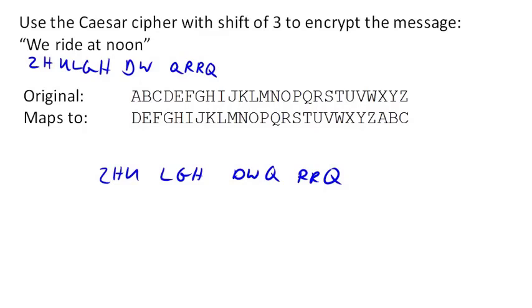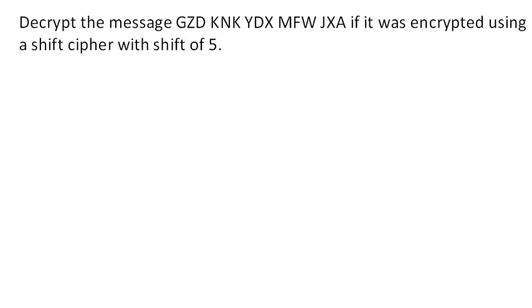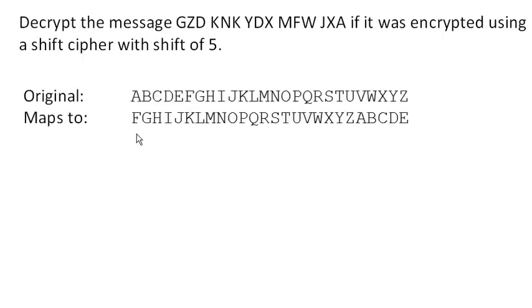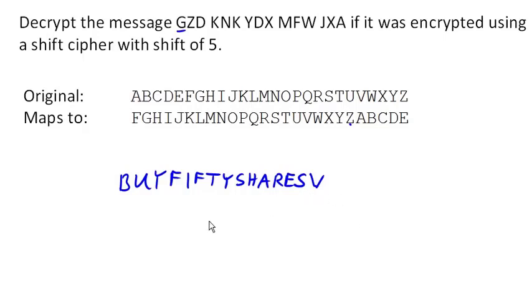Now we can go the other way — decrypting a message that was encrypted using a shift cipher of shift 5. A shift of 5 means A shifts 1, 2, 3, 4, 5 characters over, so A maps to F. To decrypt, we go the other way. G decrypts to B, Z decrypts to U, D decrypts to Y, and we continue. Our final unencrypted message is 'buy 50 shares.' There's an extra character at the end — that was probably added just to make the message come out in nice chunks of 3.